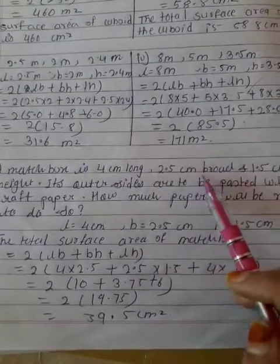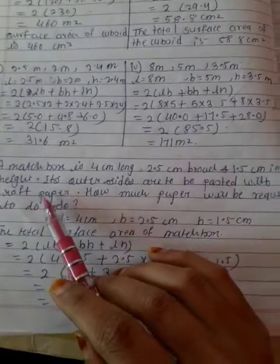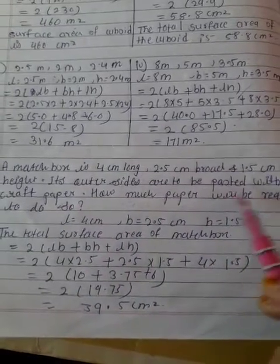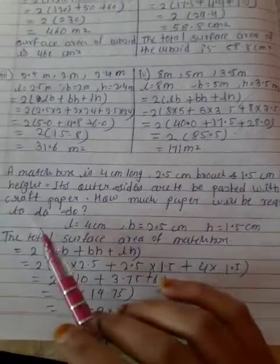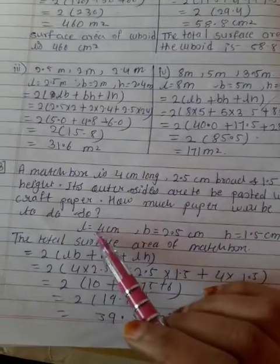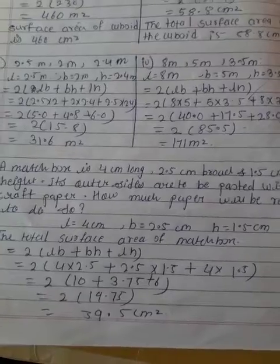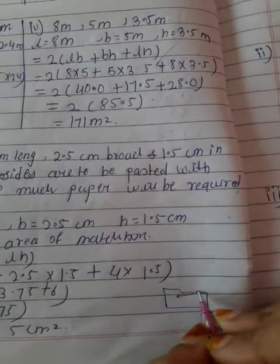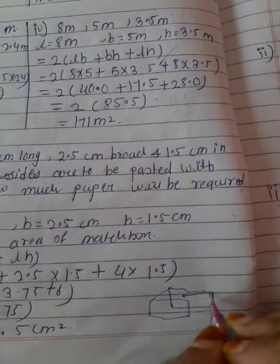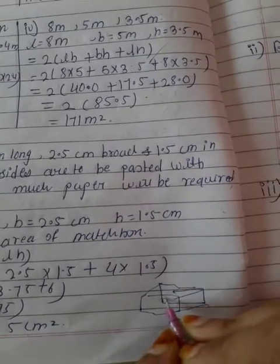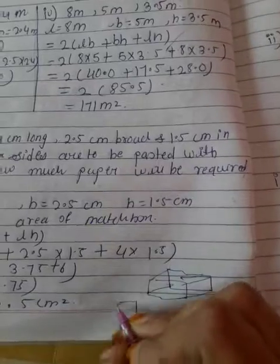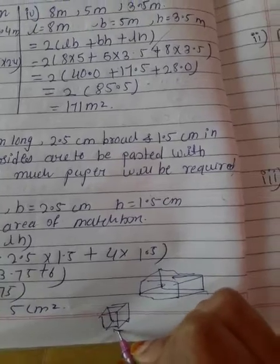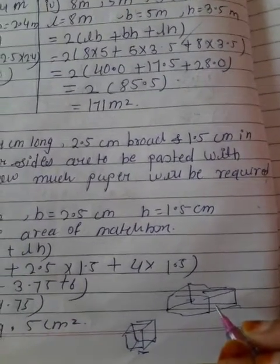The next question: a matchbox is 4 centimeters long, 2.5 centimeters broad, and 1.5 centimeters in height. Its outer sides are to be pasted with craft paper. How much paper will be required? A matchbox has the shape of a cuboid — the shape that looks like a rectangle is called a cuboid. The shape that looks like a square is called a cube.